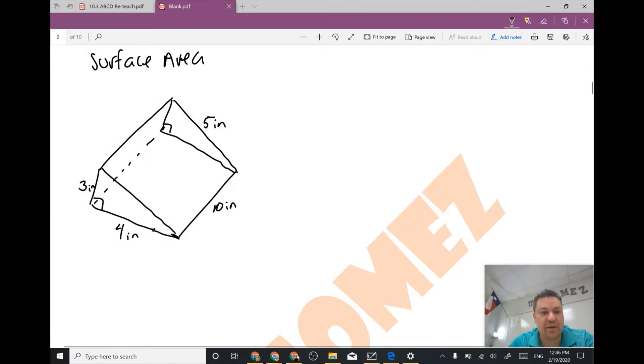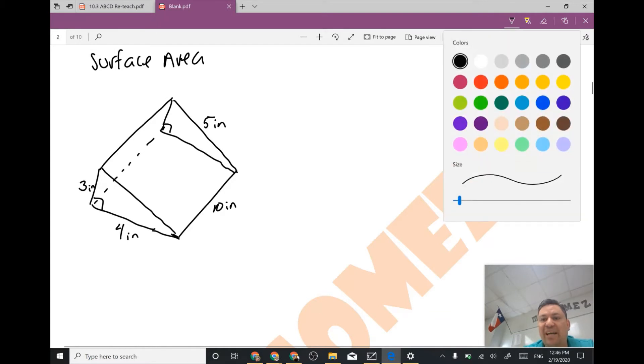So this kind of looks like a bike ramp if you want to put it like that. The first thing that we have to do is identify my bases.